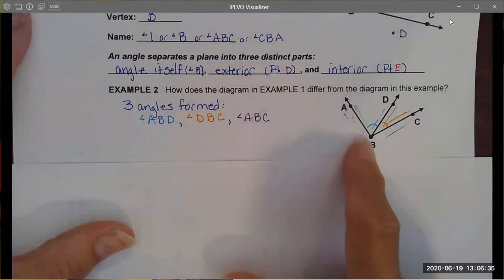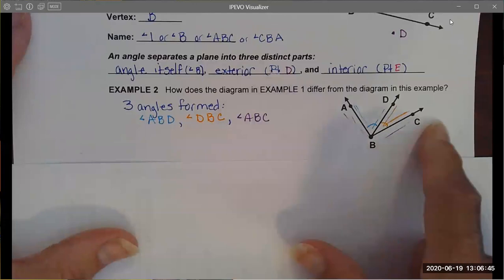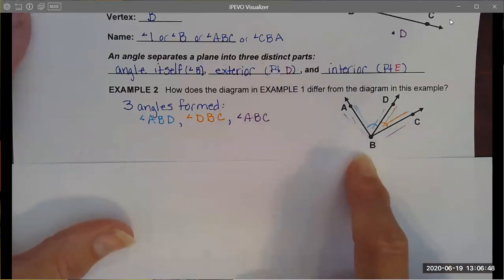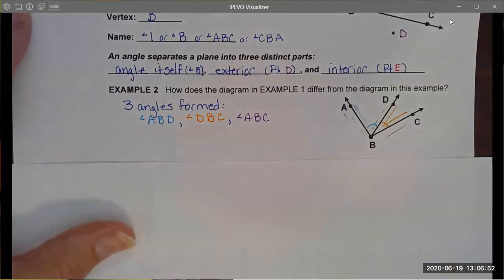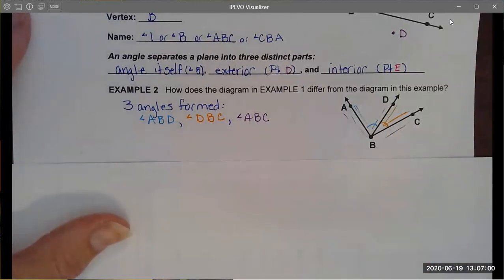We have the angle I've sketched in blue, angle ABD. We also have angle DBC which is highlighted in orange, and then these two angles also have a larger angle with point D being on the interior, and that larger angle would be angle ABC. So in this case you could not talk about angle B because I would not know which of those three angles you were specifically referring to.